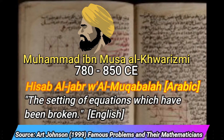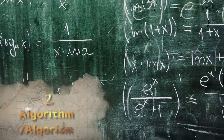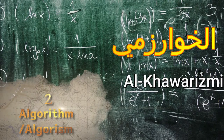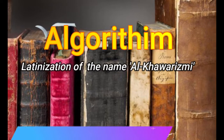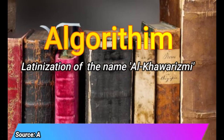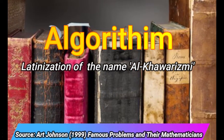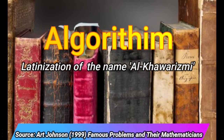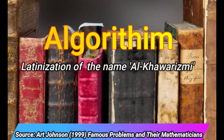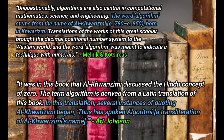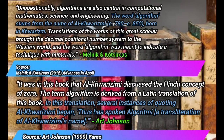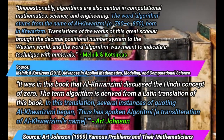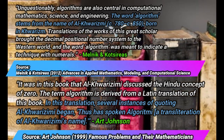Speaking of al-Khawarizmi — Algorithm. This mathematical term is literally a Latinization of the name al-Khawarizmi. According to Art Johnson, this came to be through the Latin translations of al-Khawarizmi's work, and thus those who quoted it had spoken in the language of al-Khawarizmi. Therefore: algorithm — which further demonstrates the great influence and importance of this great mathematician.